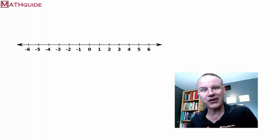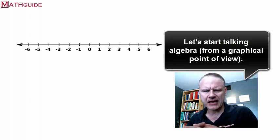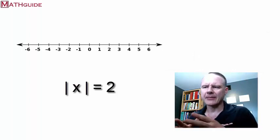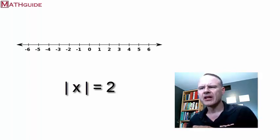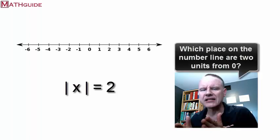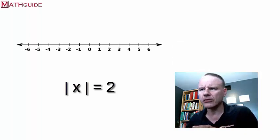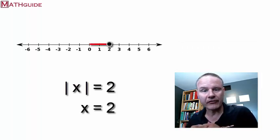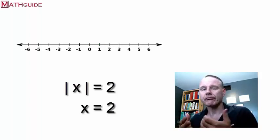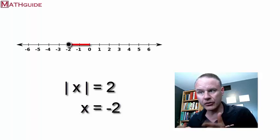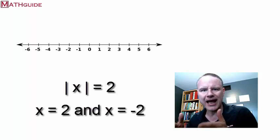Let's talk about how this works with equations. What if we put some x's in here and say the absolute value of x is equal to two? You're really asking yourself: what places on the number line are two units away? Well, two is two units away from zero, and negative two is also two units away from zero. So this equation has two solutions. If you took the absolute value of x equal to three, there'd also be two solutions — positive three and negative three.